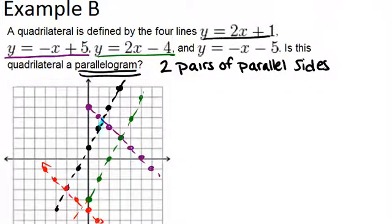And here is our quadrilateral. It's actually this shape right here. That's the shape, the quadrilateral, that is made by the intersection of those four lines. So this is a parallelogram if the opposite sides are parallel. So that means the opposite sides have to have the same slopes. We actually already know that from the equations.